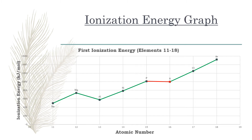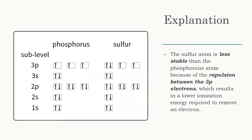It's because the electronic configuration is less stable. Look here at phosphorus's 3p sublevel — each box has one electron, making it very balanced and stable. This means that removing one of the electrons would be harder.